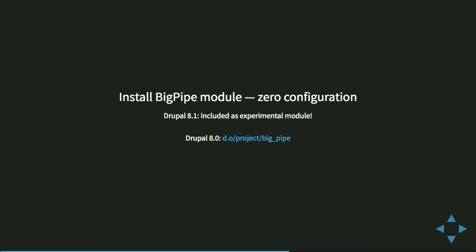If you're on Drupal 8.0, install the BigPipe contrib module — it is kept in sync with Drupal 8.1. BigPipe did get committed to Drupal 8.1 as an experimental module. The goal is to get as much exposure as possible and make sure there are no edge cases we are unaware of. So far it is looking very good — we are getting very few bug reports, literally less than a handful, and only tiny things that are very easy to resolve. So just go and install it.